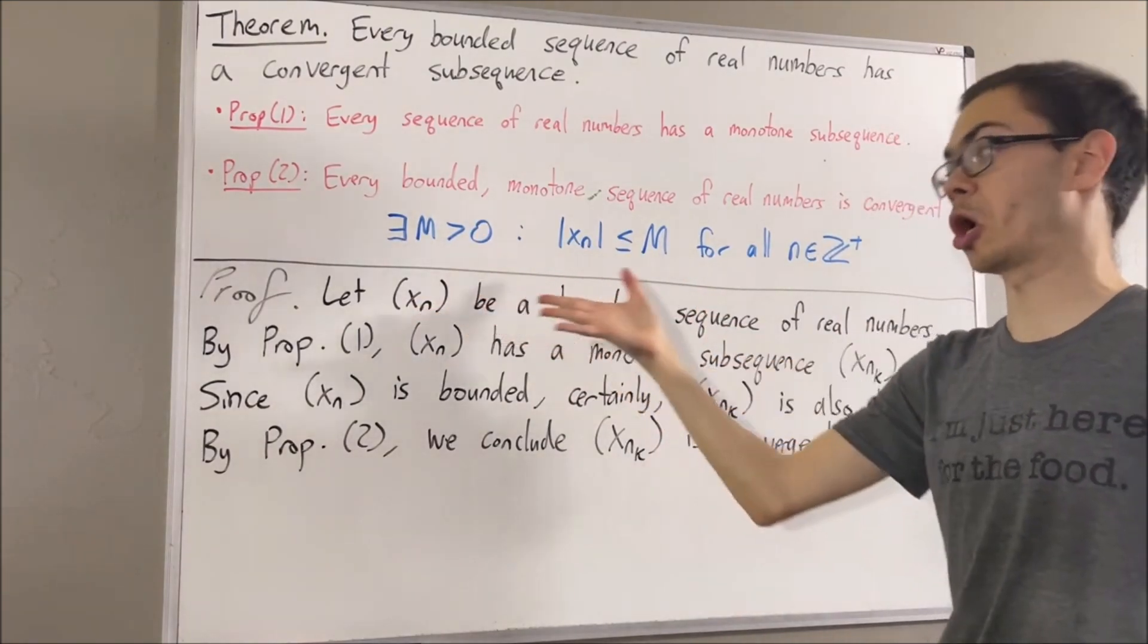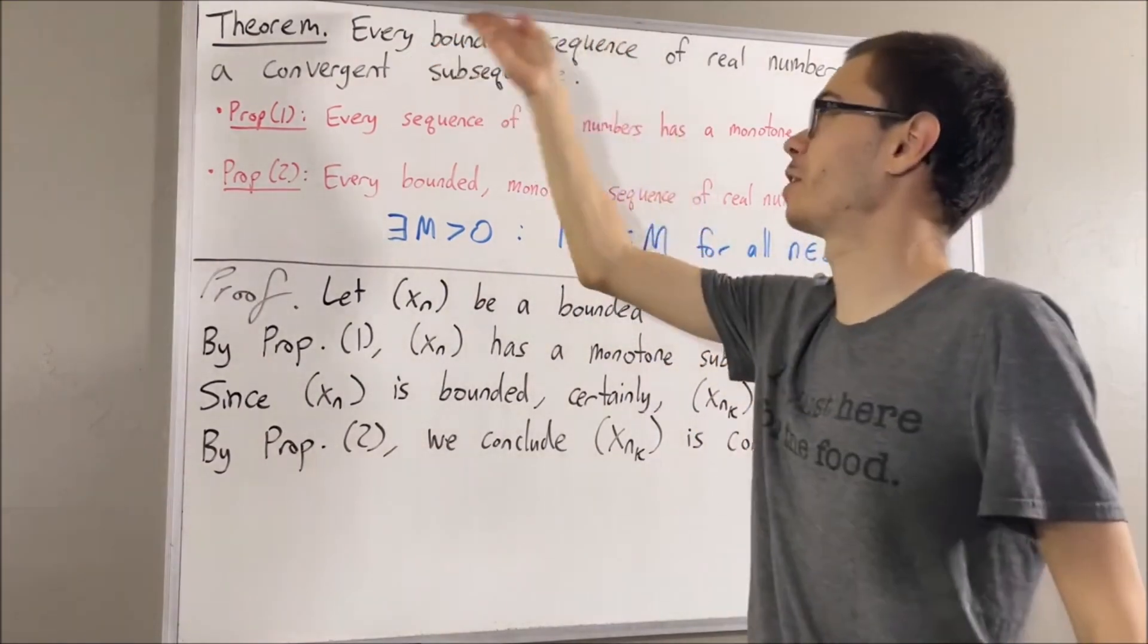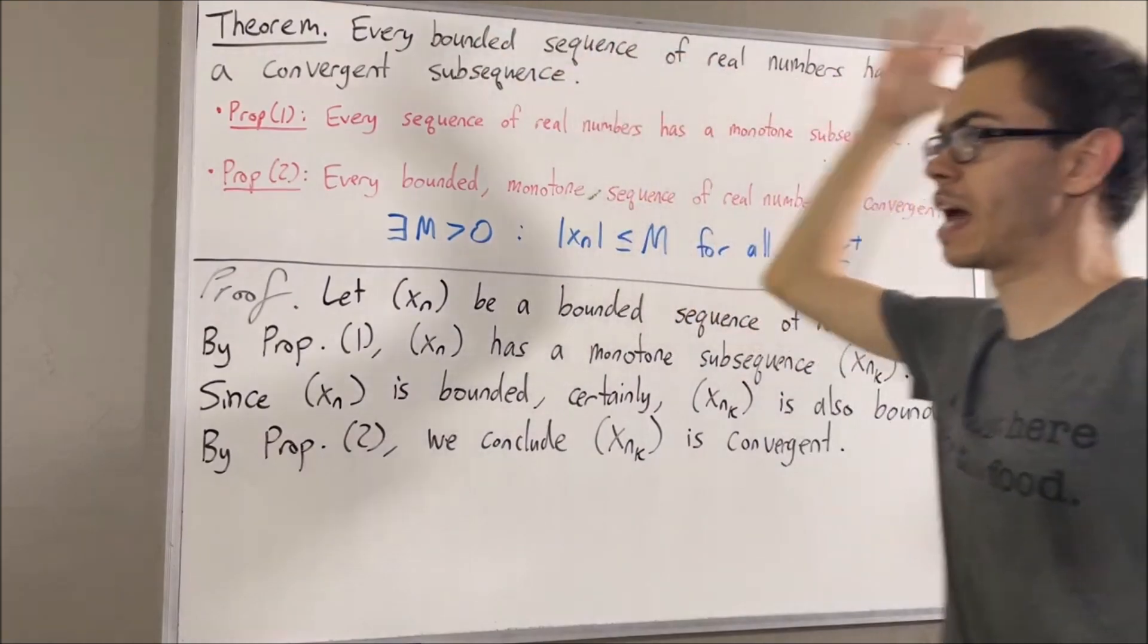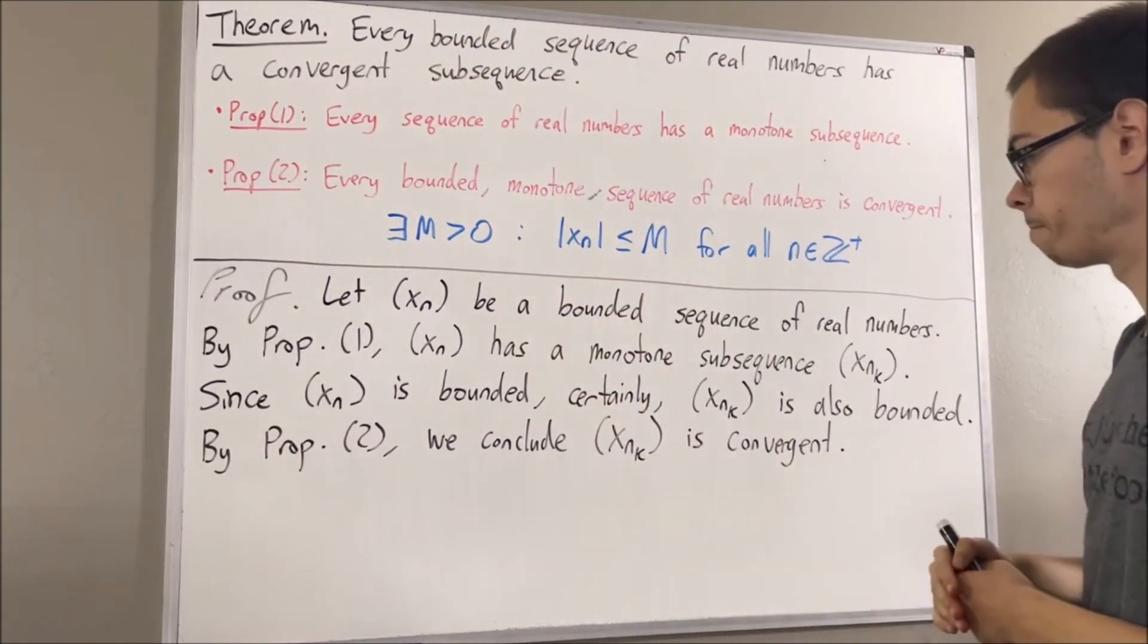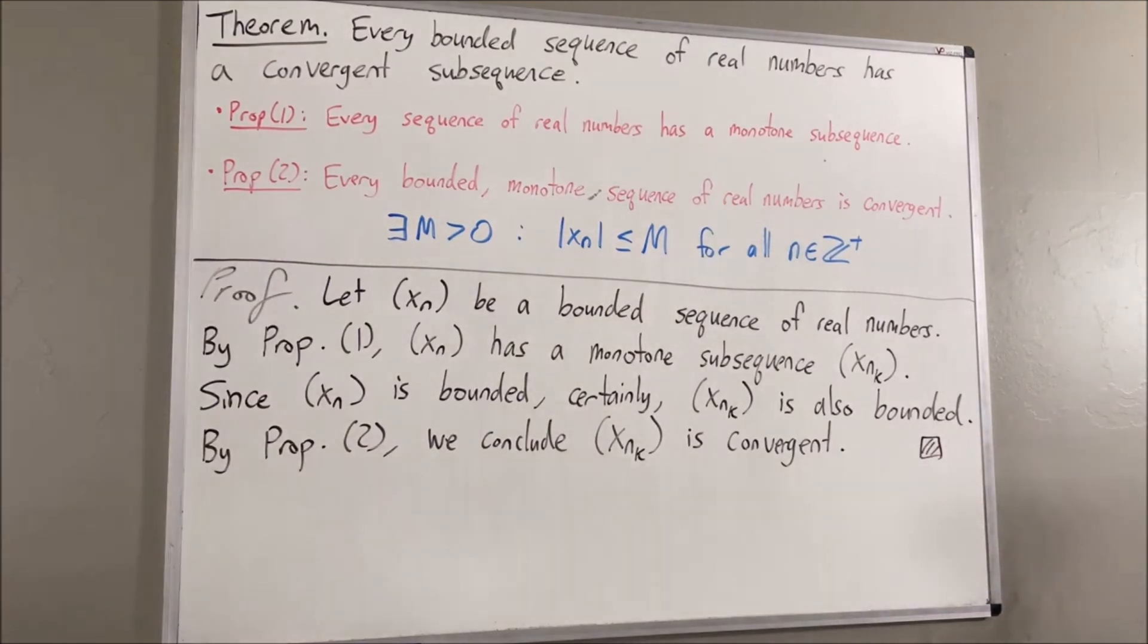So since xn was an arbitrary bounded sequence of real numbers, this means we've shown every bounded sequence of real numbers has a convergent subsequence. This completes the proof. That's pretty much it for this video.